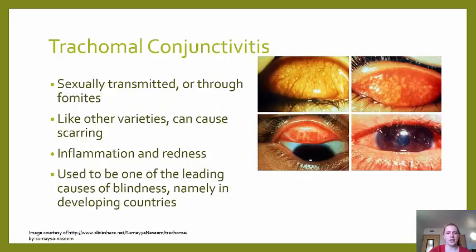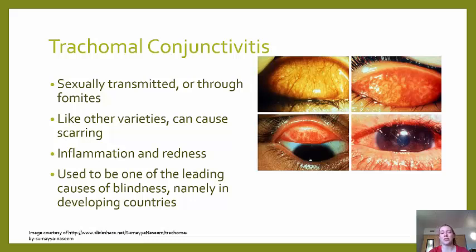Trachoma conjunctivitis is a trachoma infection of the eye that can cause redness and scarring, and this scarring can lead to blindness. It actually used to be one of the leading causes of blindness in the world.